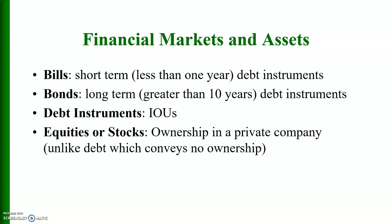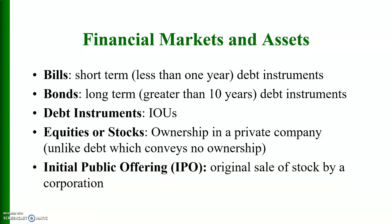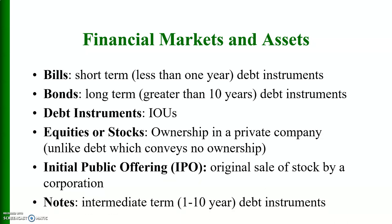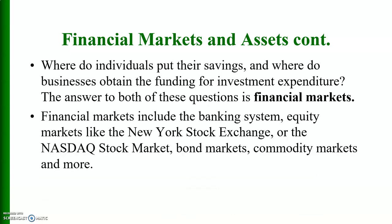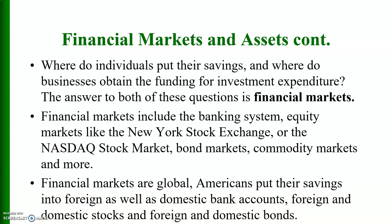Equities are stocks — ownerships in a private company. Initial public offering (IPO) refers to the original sale of stock by a corporation. Notes are intermediate-term debt instruments. Securities is a synonym for financial assets. Individuals put their savings and businesses obtain funding for investment through financial markets, which include the banking system, equity markets like the New York Stock Exchange or the NASDAQ, bond markets, commodity markets, and more.